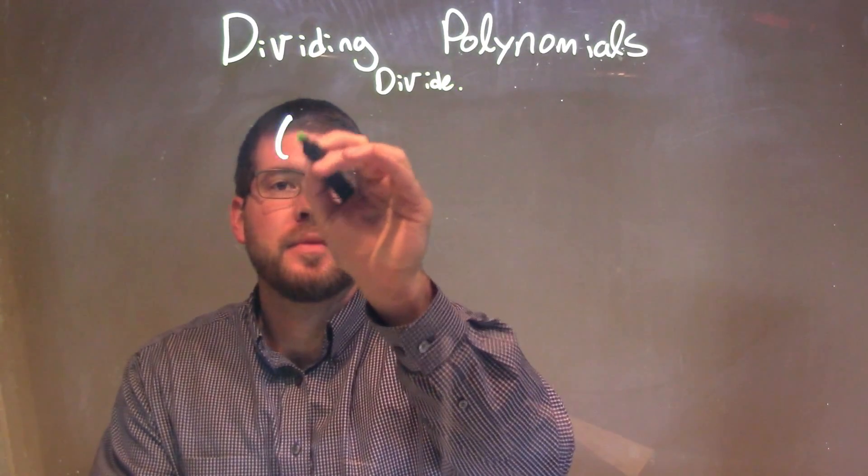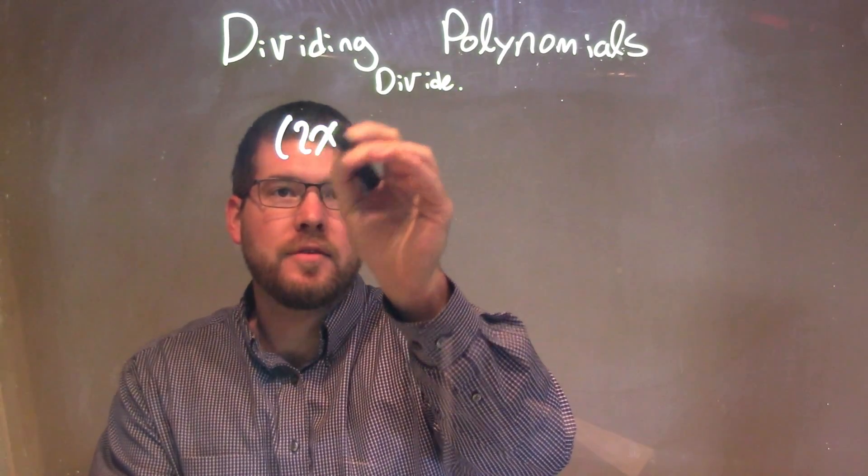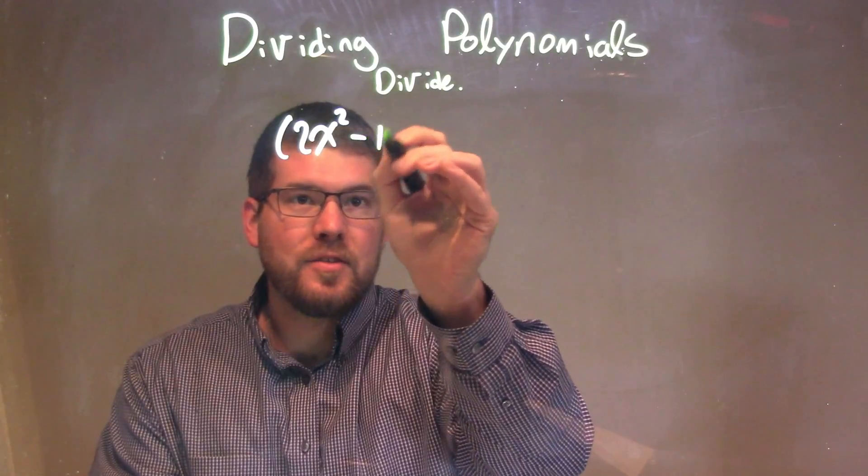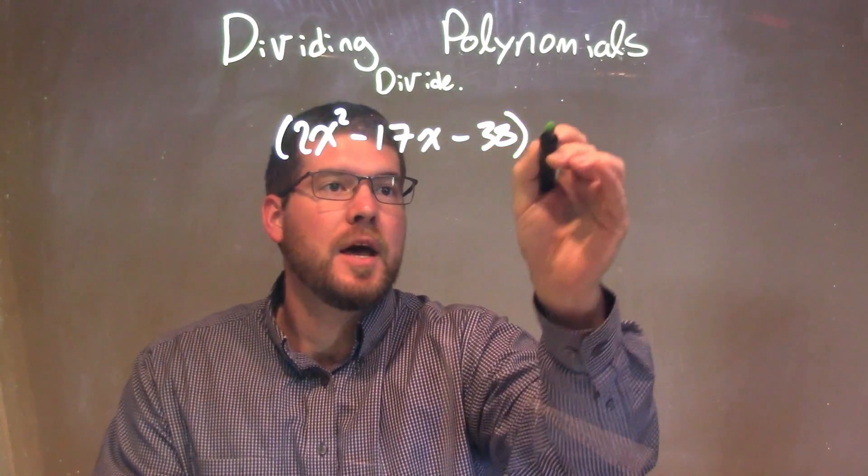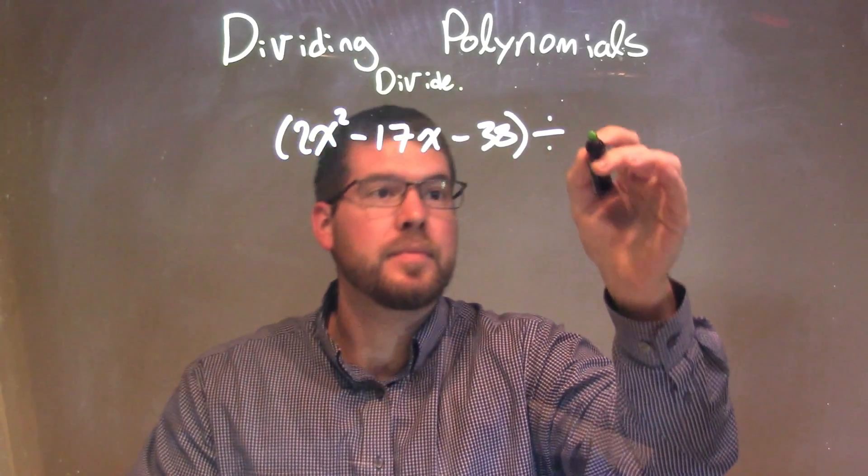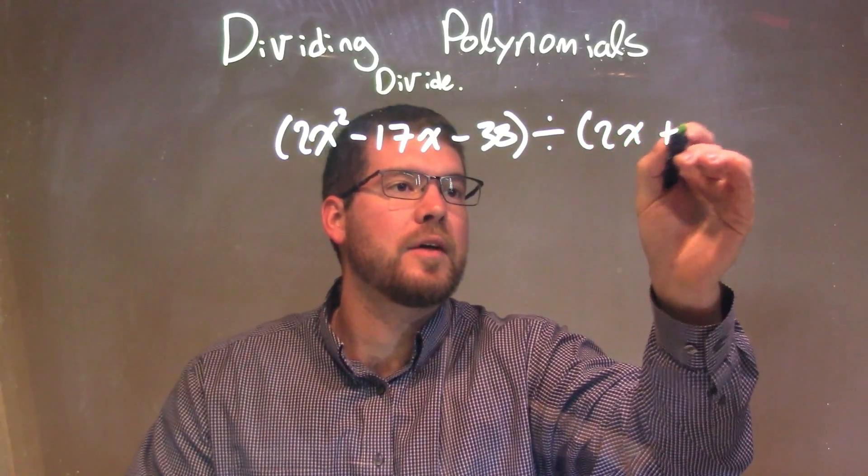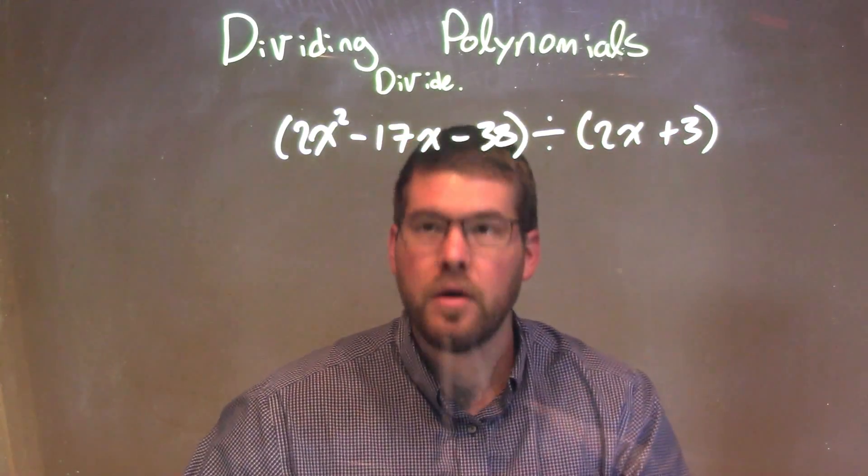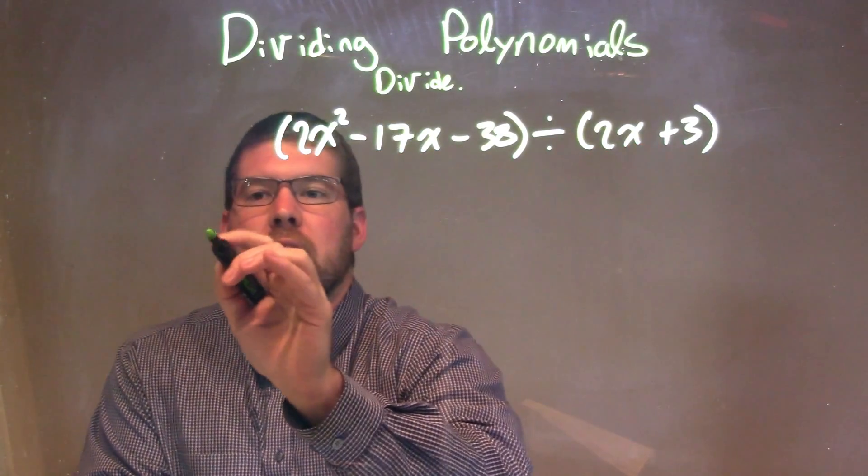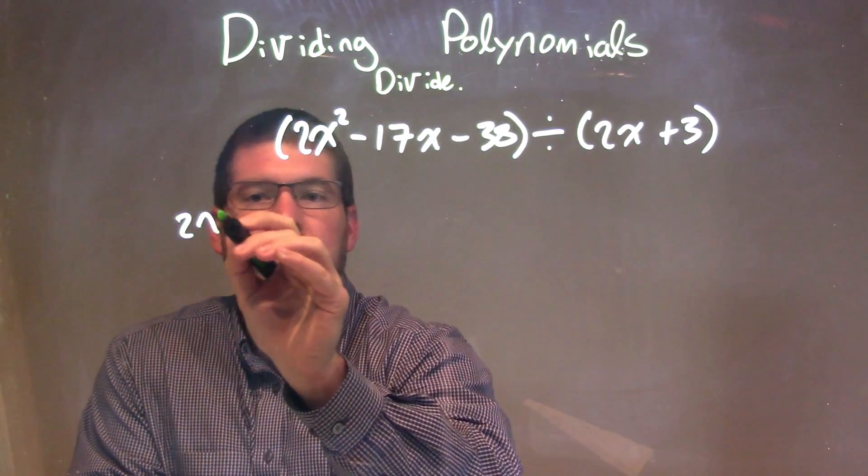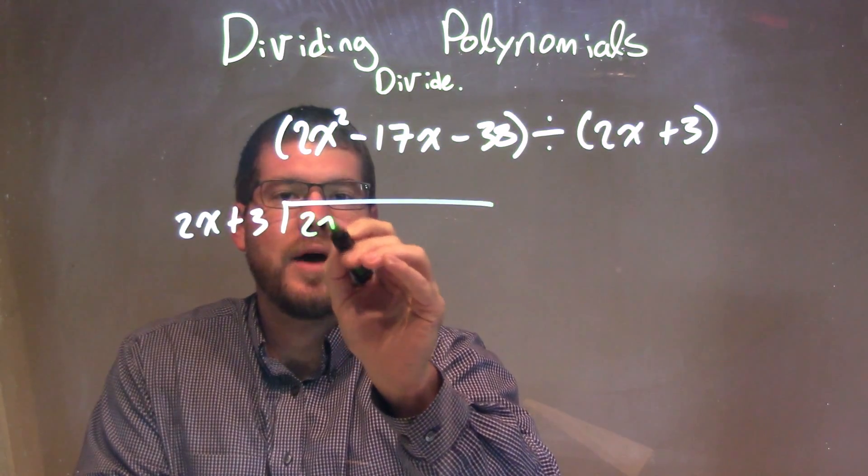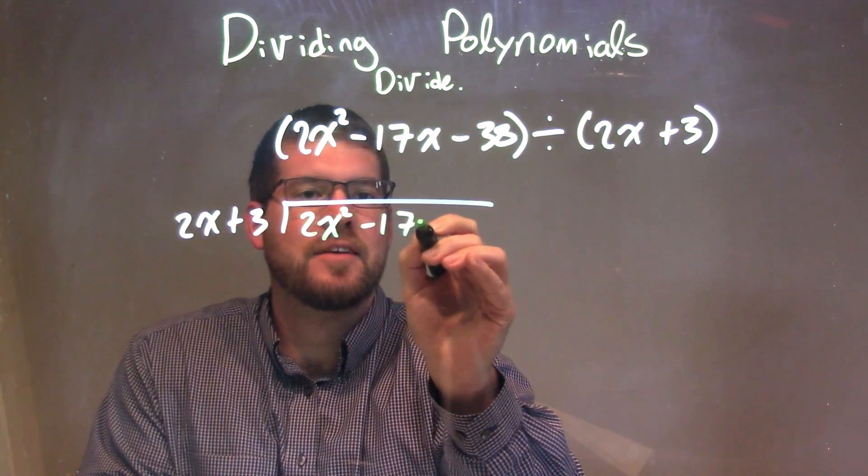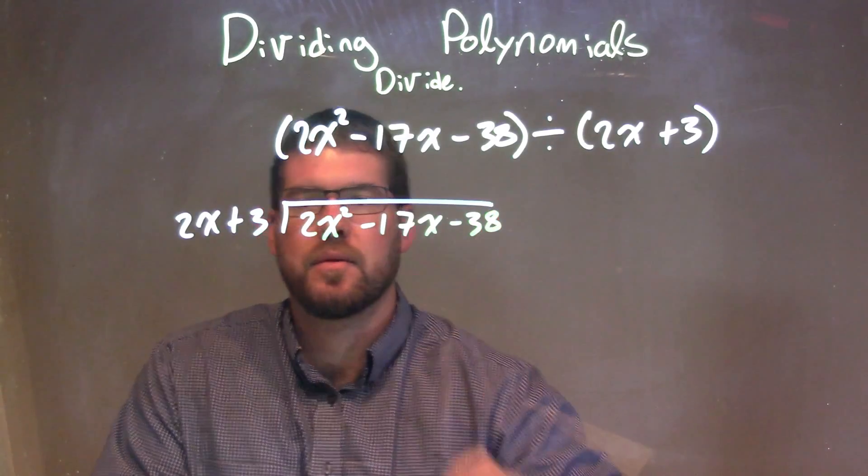If I was given this problem here, 2x squared minus 17x minus 38, and we're going to divide that by 2x plus 3. I'm going to rewrite this to have my divisor, 2x plus 3, go into my dividend with long division: 2x squared minus 17x minus 38.